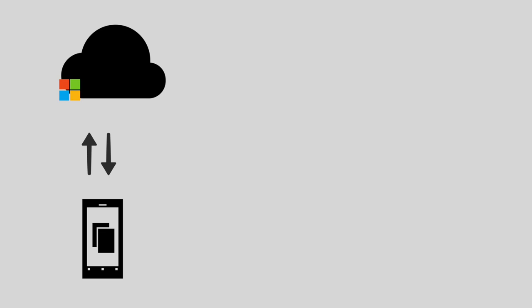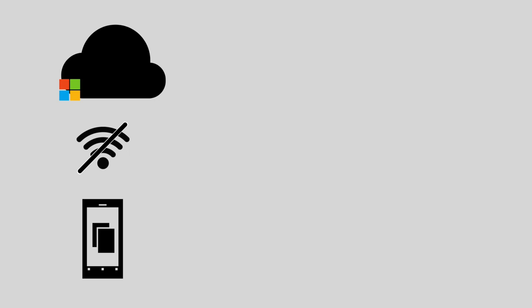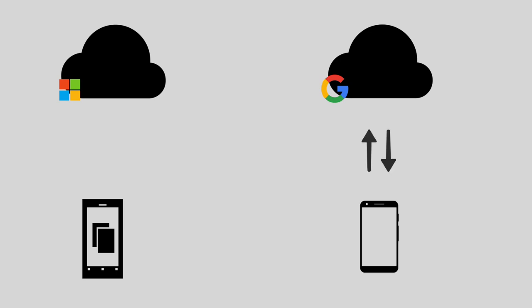Let me briefly explain what happened behind the scenes. Every time you added a new contact on your Windows Phone, it saved it on your phone but also made a copy on Microsoft's cloud. Even if you weren't always on Wi-Fi, it synced your contacts to the cloud whenever you connected. What we just did is copy those contacts from your Microsoft cloud onto your Google cloud. Now, signed into your Google account on your new Android phone, it'll automatically download all those contacts directly to your Android phone.